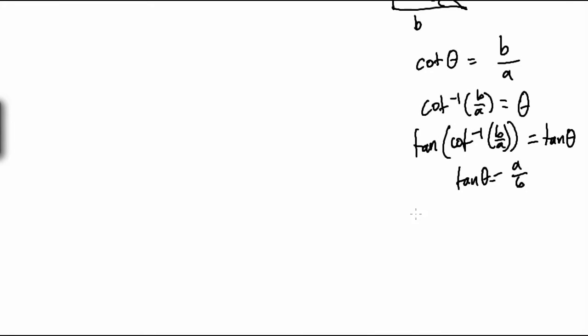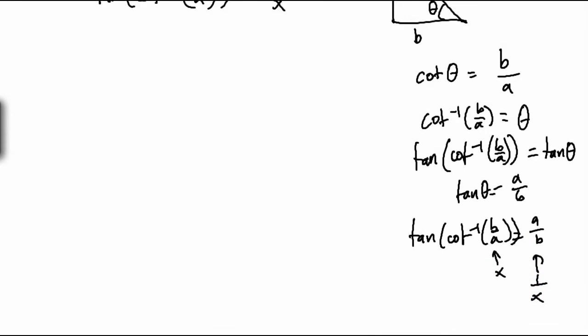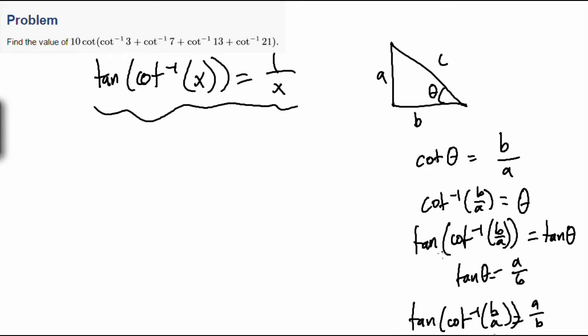And I bet you can see where we're going with this. Thus tangent cotangent inverse of B over A equals A over B. So this quantity, if this is x, this is going to be 1 over x. So this is true.